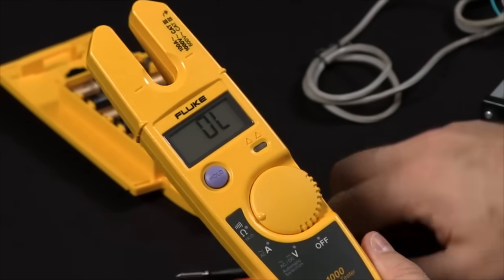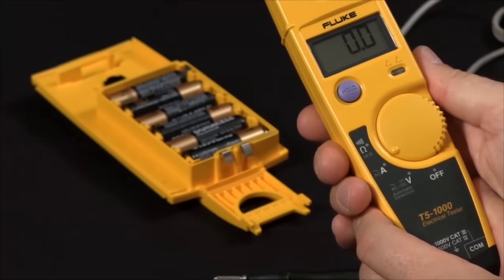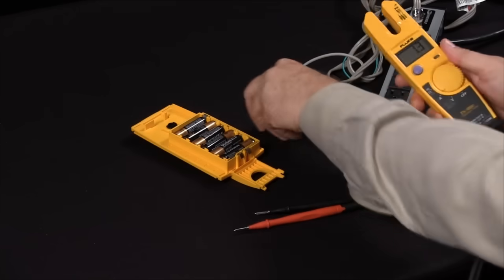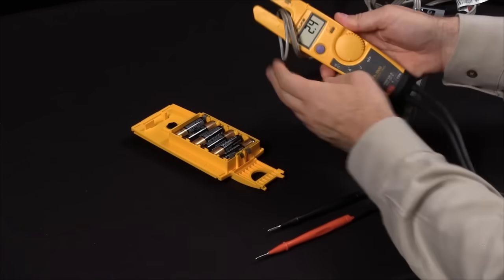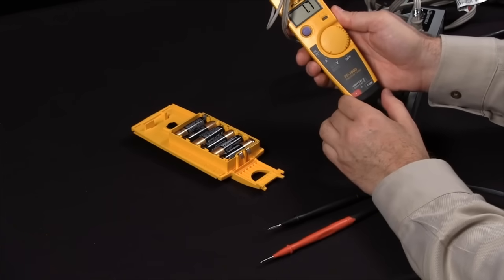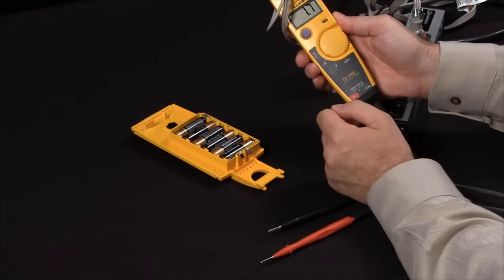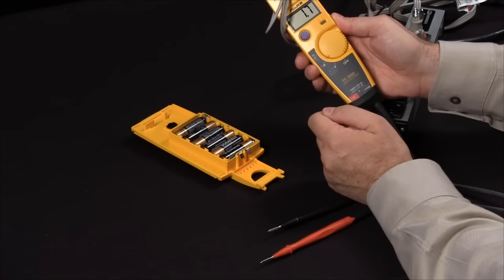To take a current measurement, simply move the dial position to measure current, and now you can slide your open jaw design around your current source, and right there we're reading 1.7 amps AC.